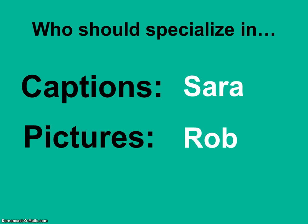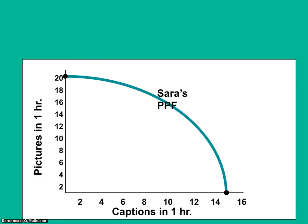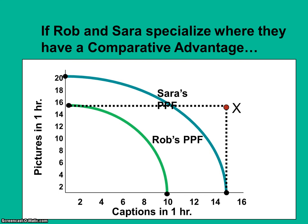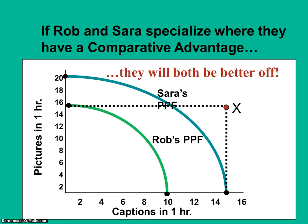Sarah should write captions and Rob should crop pictures — that's the job each individual should specialize in according to comparative advantage. Putting it all together, we can see that Sarah and Rob's individual production possibility frontiers will be less than the combination of goods they can produce if they specialize and trade. When Sarah just writes captions she can write 15, and when Rob just crops pictures he can crop 15, and that combination lies outside either of their individual production possibility frontiers. They'll both be better off if they specialize and trade.